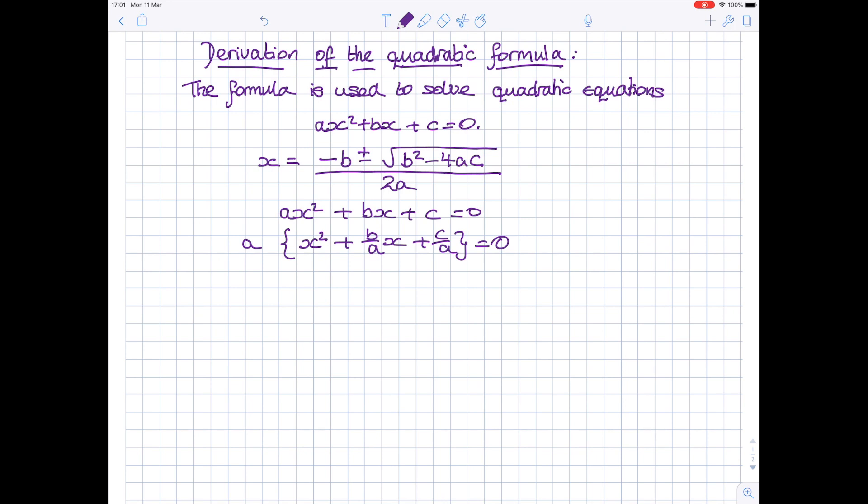Now, because we know that a doesn't equal zero, and we know that because if a was zero, the first term would be zero times x squared, so you wouldn't have an x squared term, so it wouldn't be a quadratic equation. So, because we know a doesn't equal zero, we can divide by a and just leave us with a quadratic equation where the coefficient of x squared is just 1.